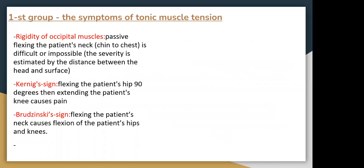The first group involves symptoms of tonic muscle tension. We have rigidity of neck muscles — passive flexing of the patient's neck is difficult or impossible, estimated by the angle between the head and surface. There are two signs: Kernig's sign, which involves flexing the patient's hip 90 degrees then attempting to extend the knee; and Brudzinski's sign, which involves flexing the patient's neck, causing involuntary flexion of the patient's hip and knees.